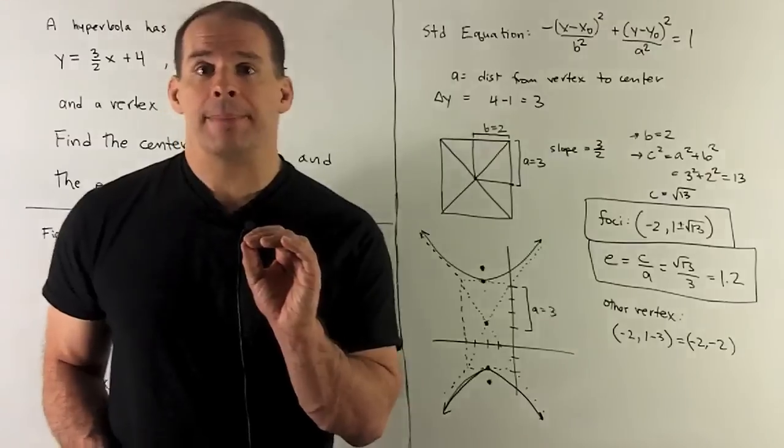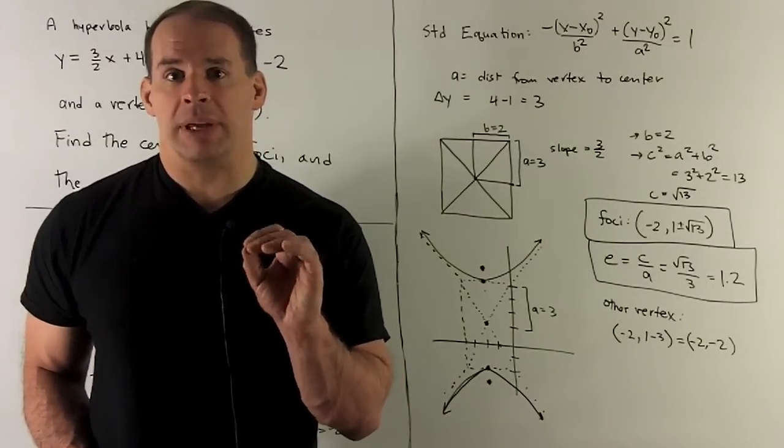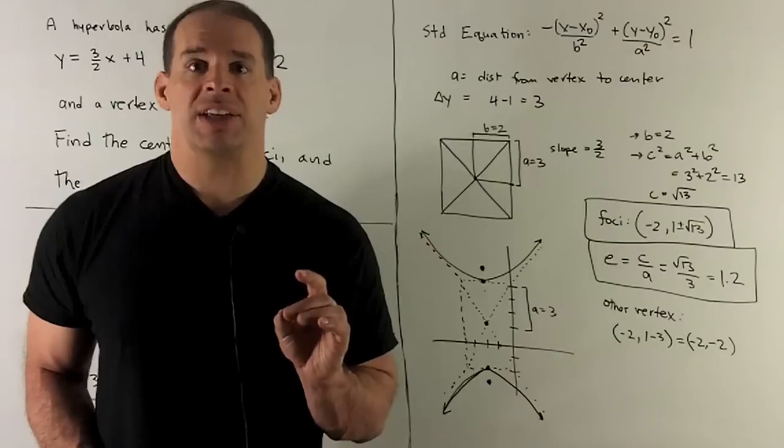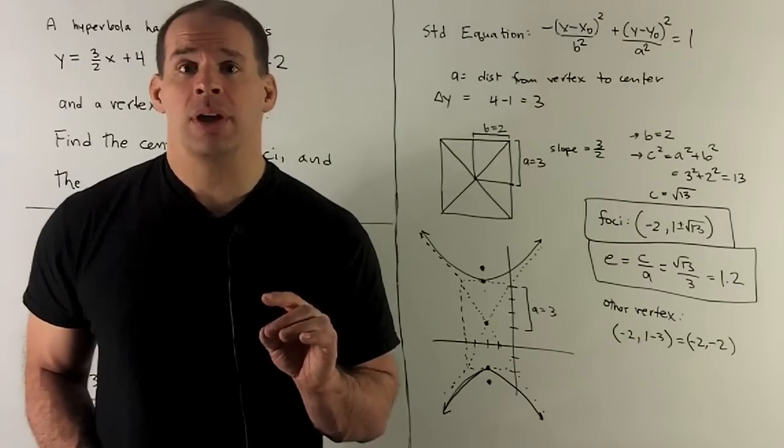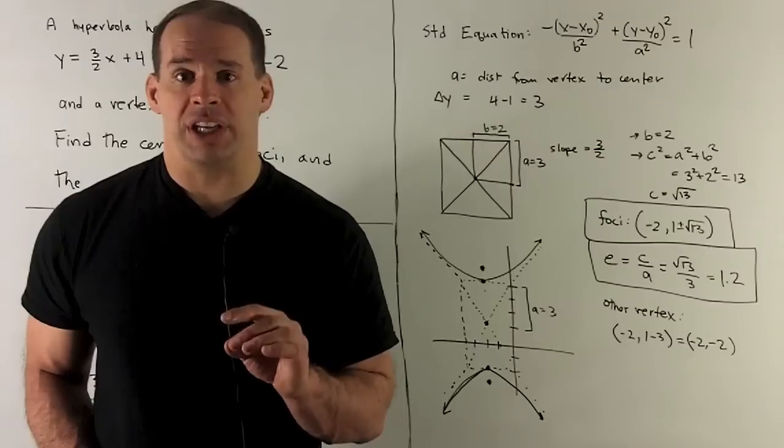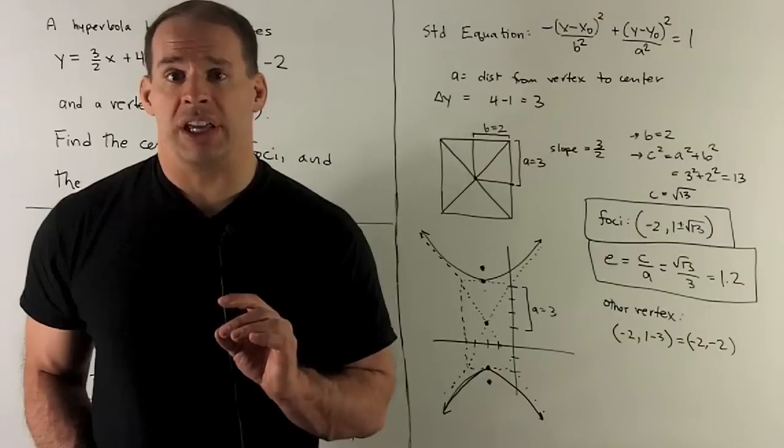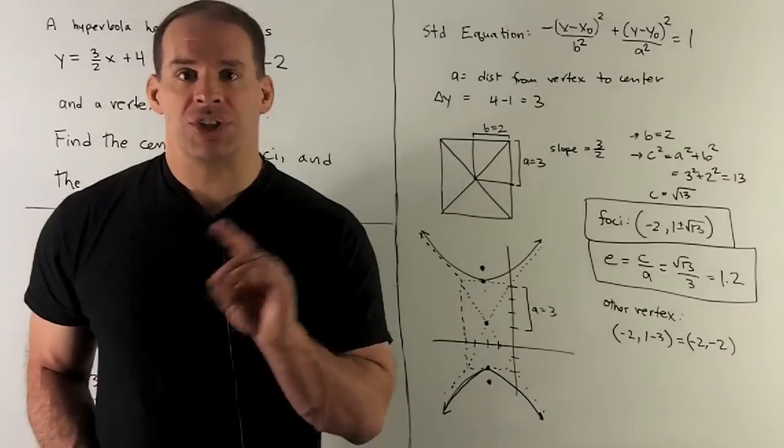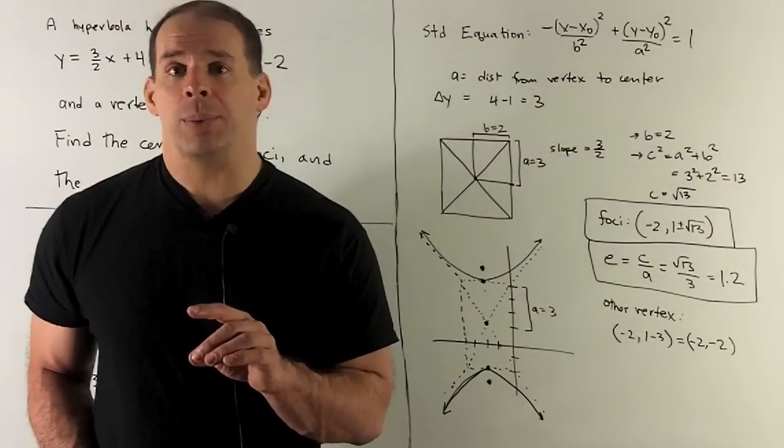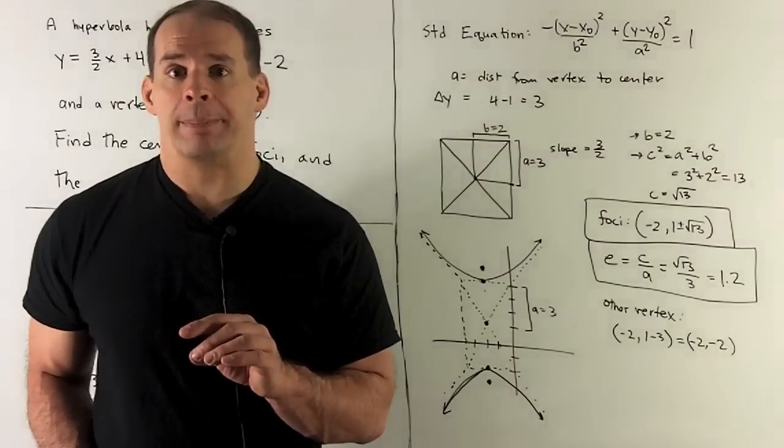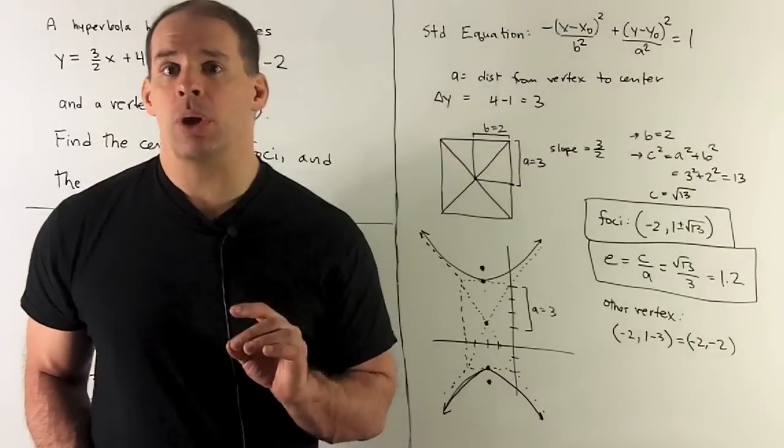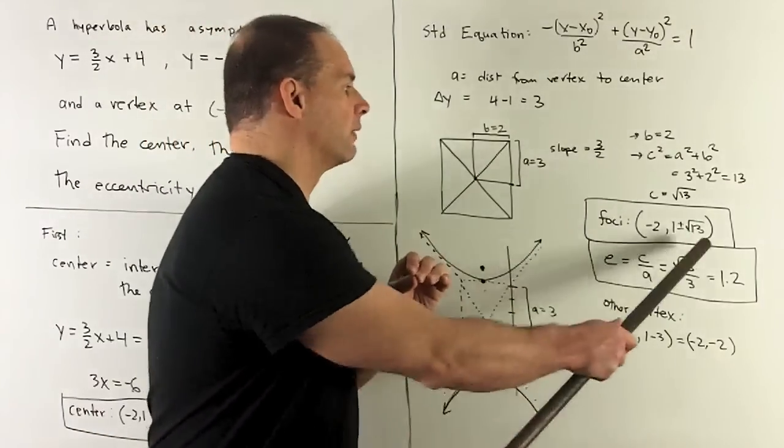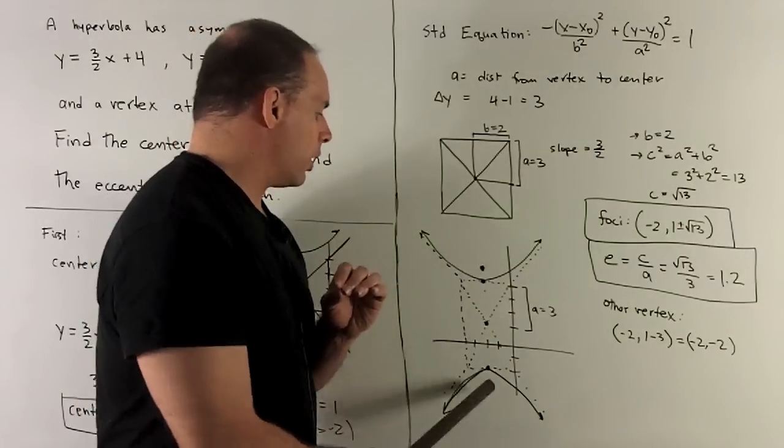Now, for the foci, we're going to need another number c, which is going to be given by c squared equals a squared plus b squared. In this case, we have a equal to 3, b equal to 2. Square them and add them, that gives me 13. So c is going to be equal to square root of 13. Then my recipe for the foci is, take your center. Then you're going to take the y value, add and subtract c from that. So our foci are going to be at minus 2, 1, plus minus square root of 13. So there's the points. And then here they are on the picture.